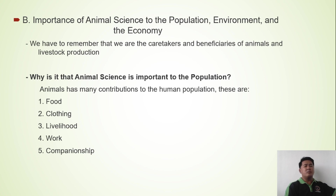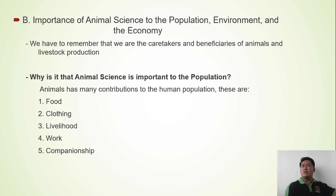We do animal production for the main purpose that we can get food out of those animals. Next is clothing. Some animal feathers are used in clothing, their skin is used in clothing, and other different parts of the animals are also used in clothing.